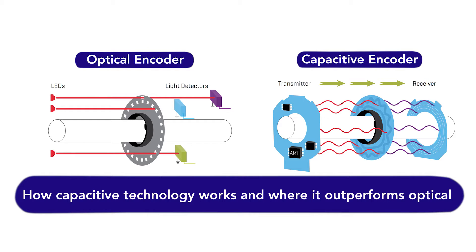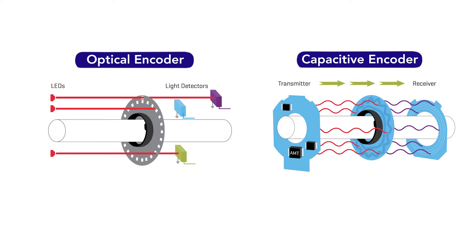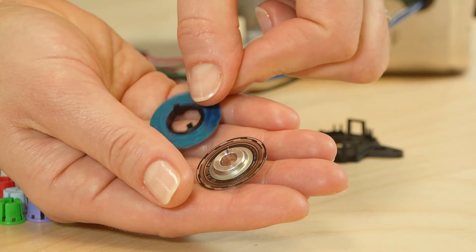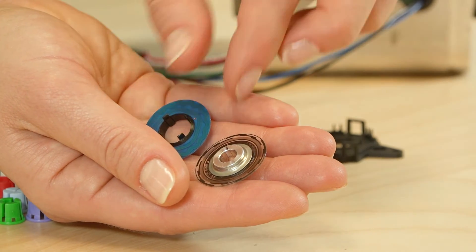Consider how capacitive technology works and where it outperforms optical. Used for years in digital calibers and as a proprietary method of measuring rotational movement, capacitive technology works by replacing a typical optical disc with a printed circuit board rotor containing a metal trace sinusoidal pattern that modulates an electrical field.